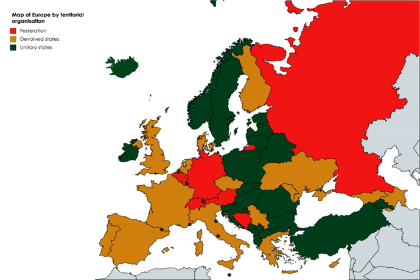While the 1999 Constitution still defines Venezuela as a federal republic, it abolished the Senate, transferred competences of the states to the federal government and granted the President of the Republic vast powers to intervene in the states and municipalities.